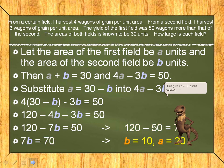This gives b equals 10, and it follows, since a plus b equals 30, that a equals 20.